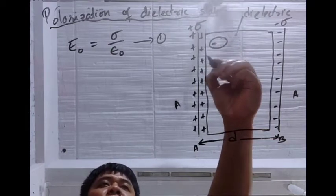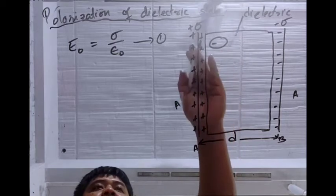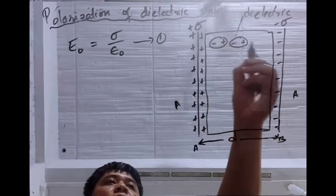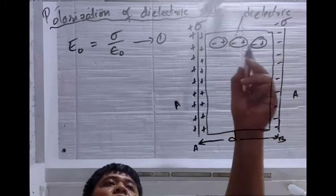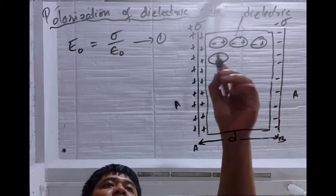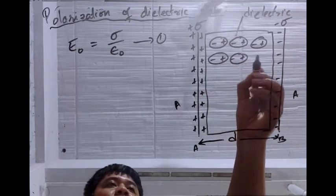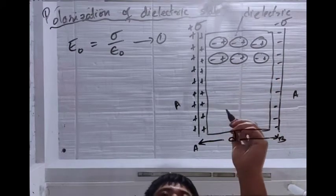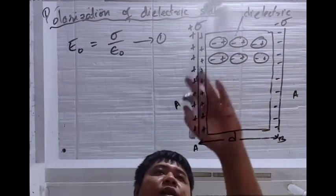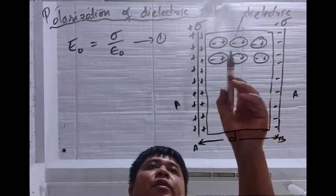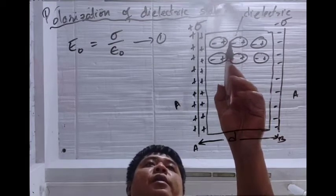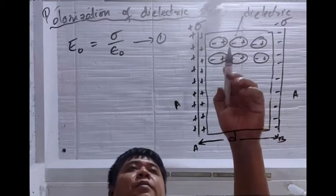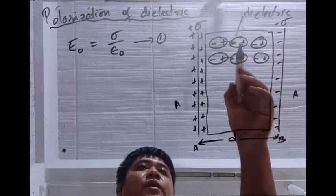Negative charges will be attracted by the positive side, and the other side will be positive. The atoms inside the dielectric are all polarized — minus, plus, minus, plus. Since they are polarized, this negative side and this positive side cancel with the neighboring charges. They cancel each other's effect.